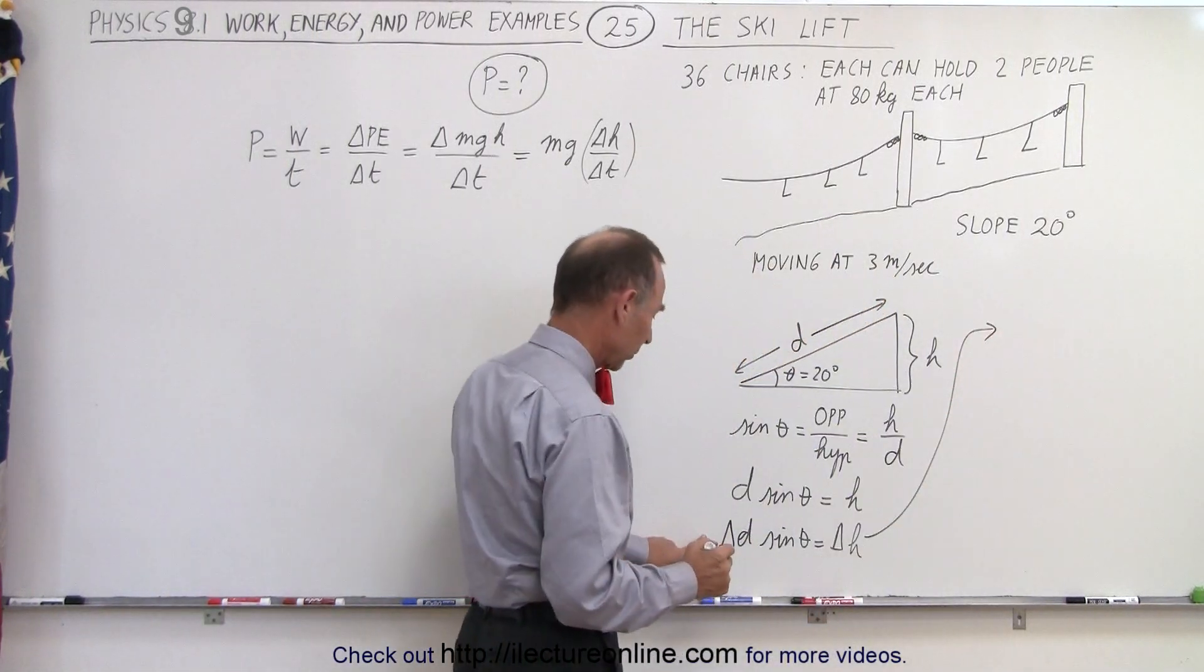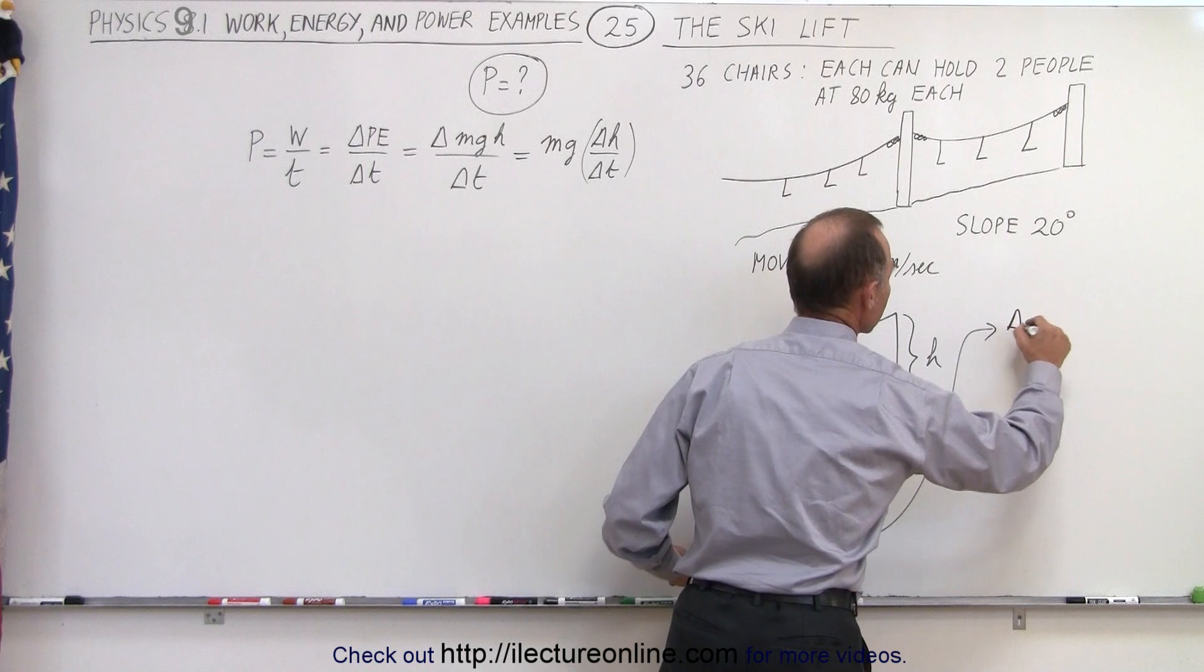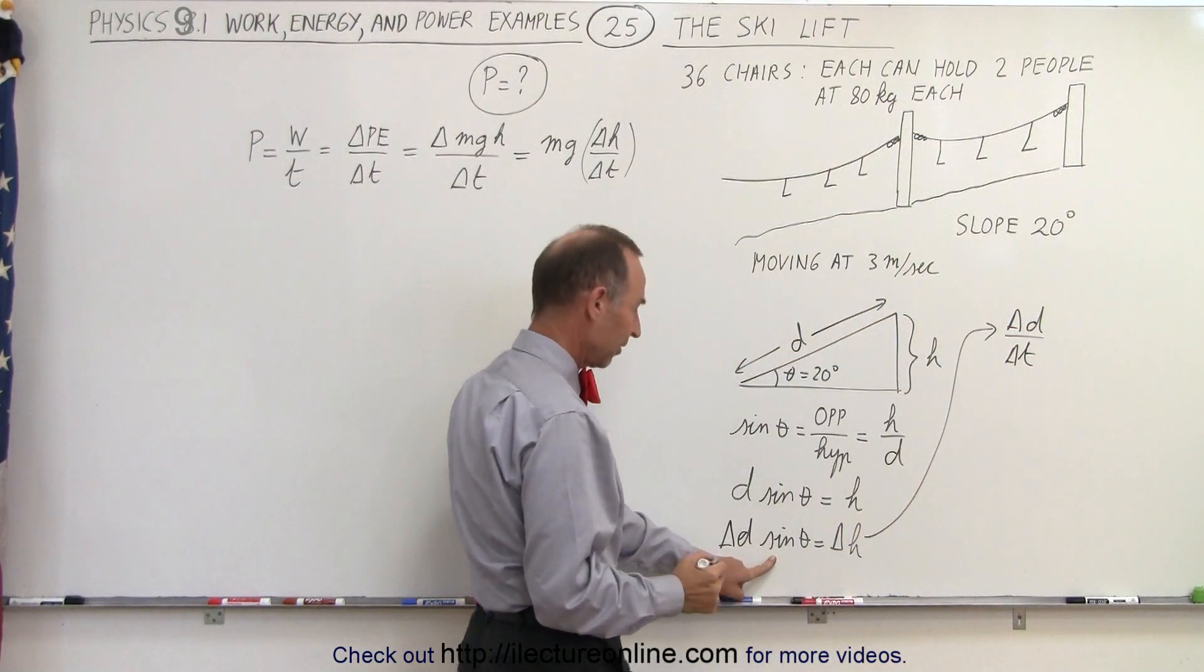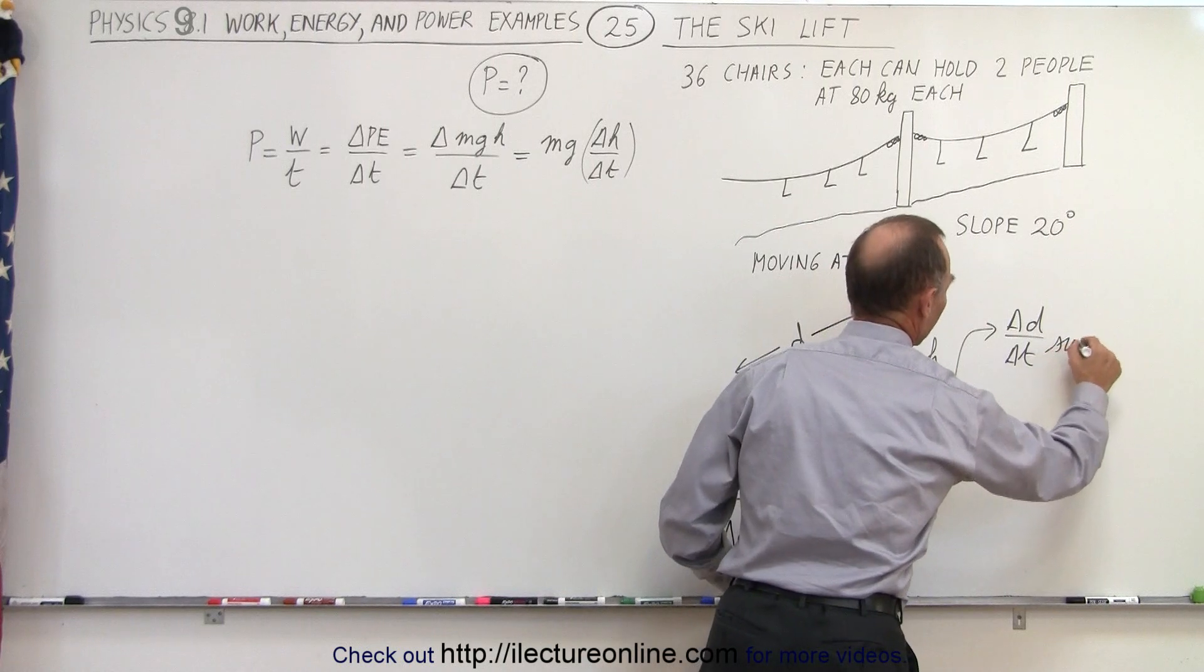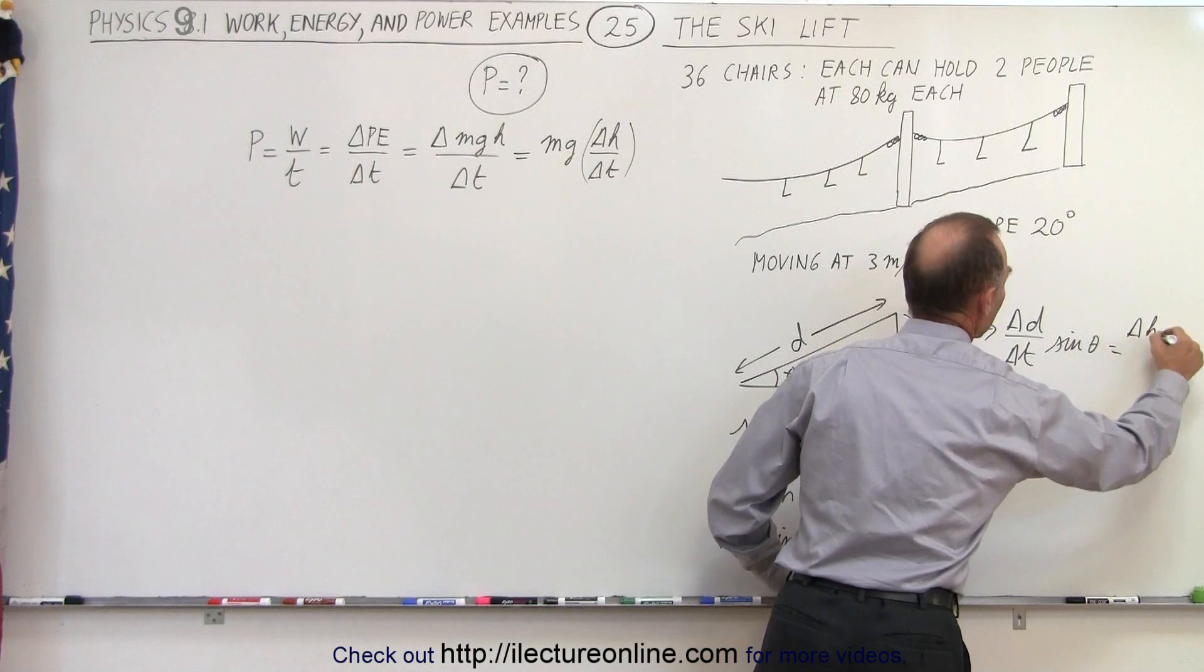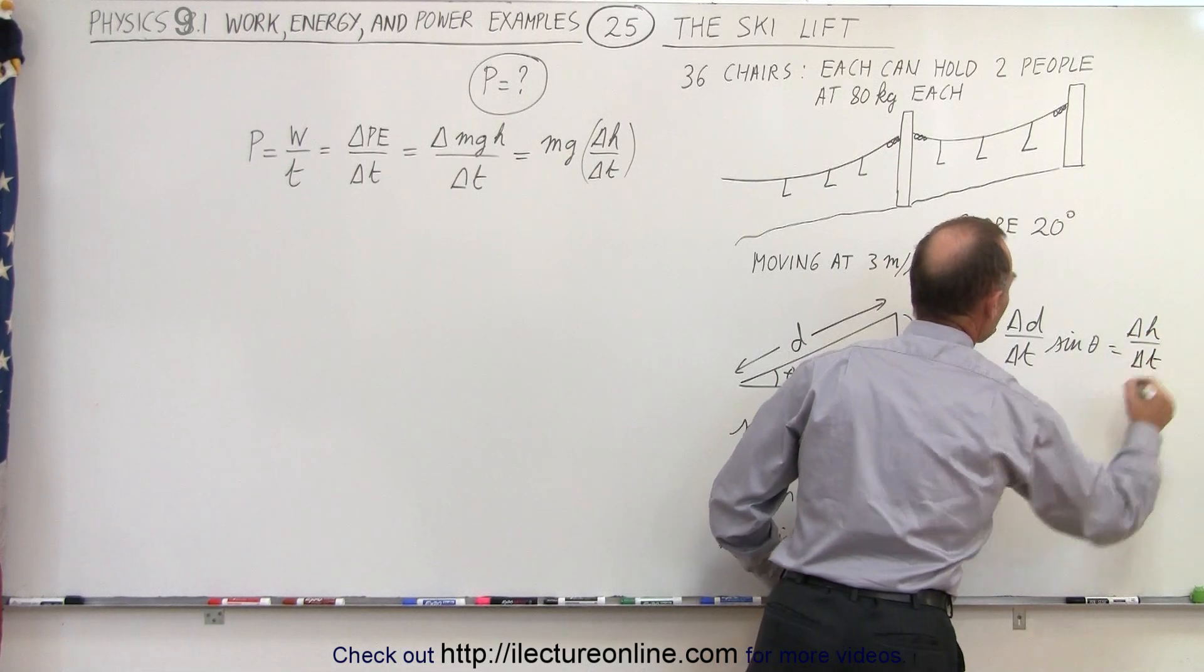So what we're going to do here is we're going to take delta D divided by delta T times the sine of theta is equal to delta H divided by delta T.